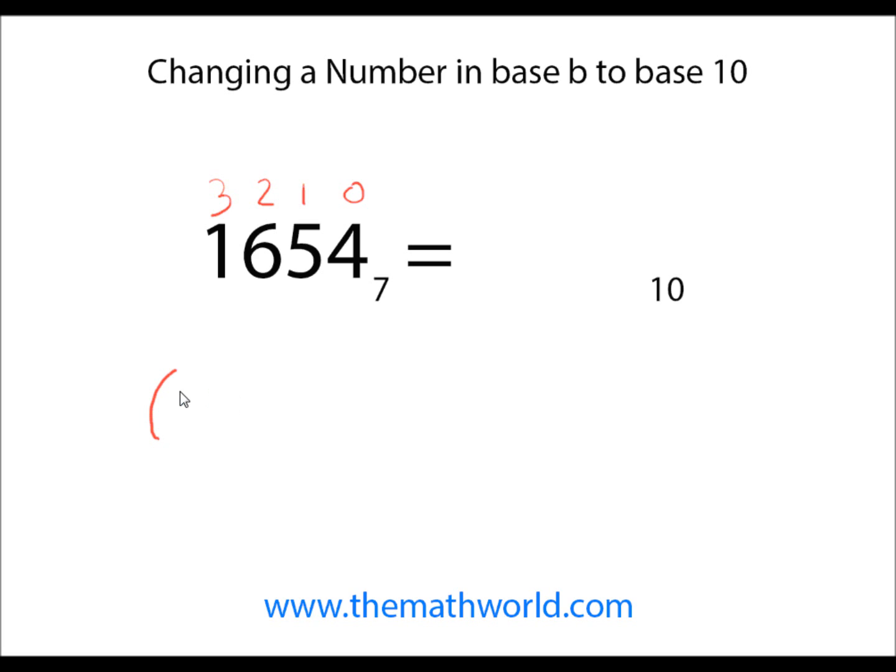What we're going to do first is we're going to take 7 cubed, so that's 3, and then we're going to multiply that by 1, which is the number there. We're going to add that to 7 squared, which is our number right here, times 6.